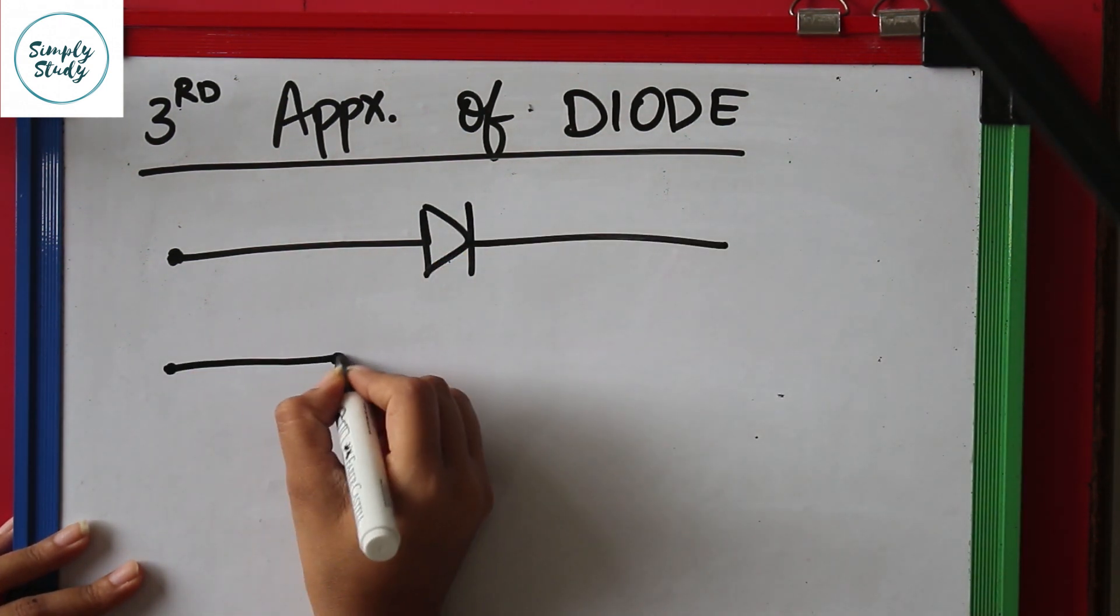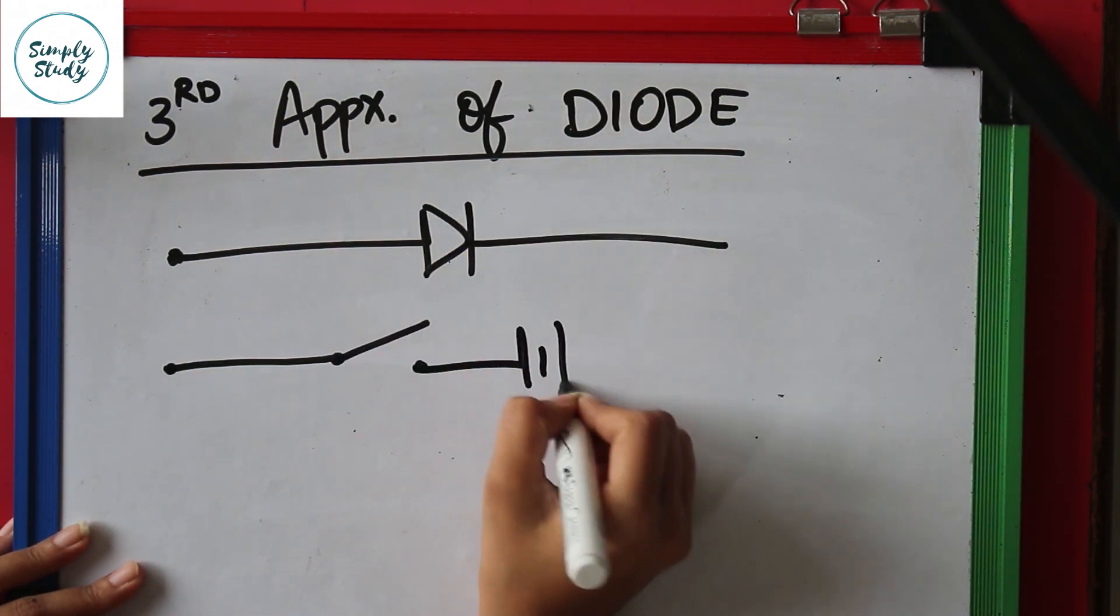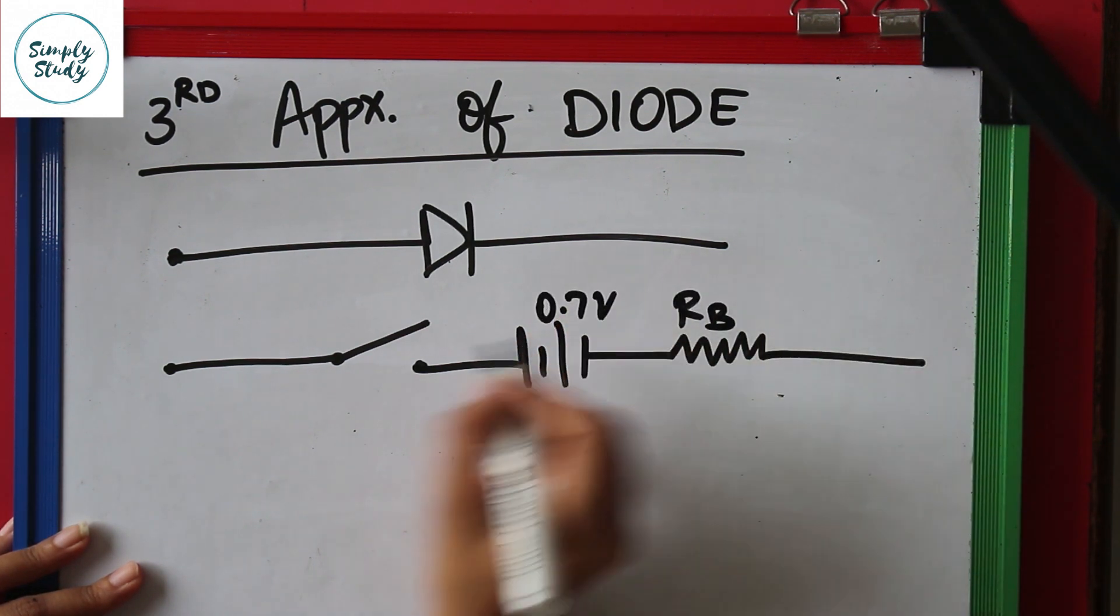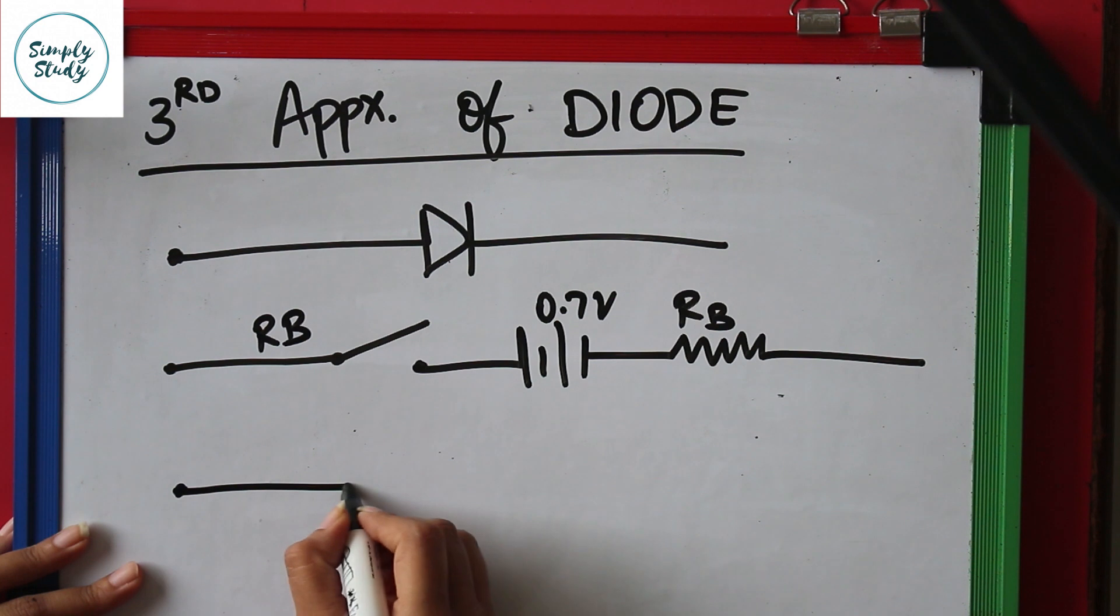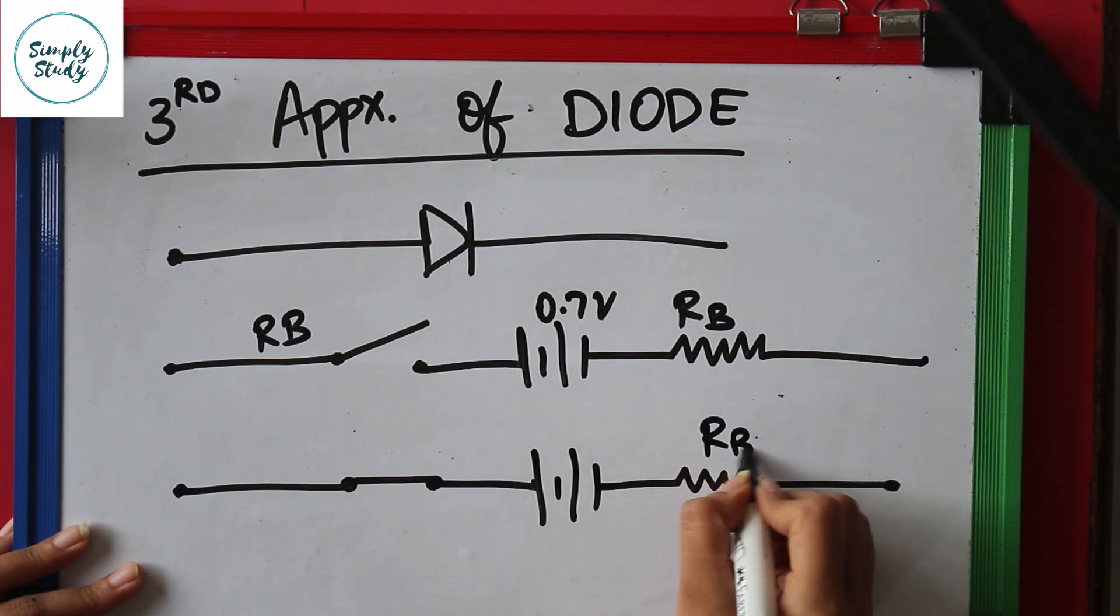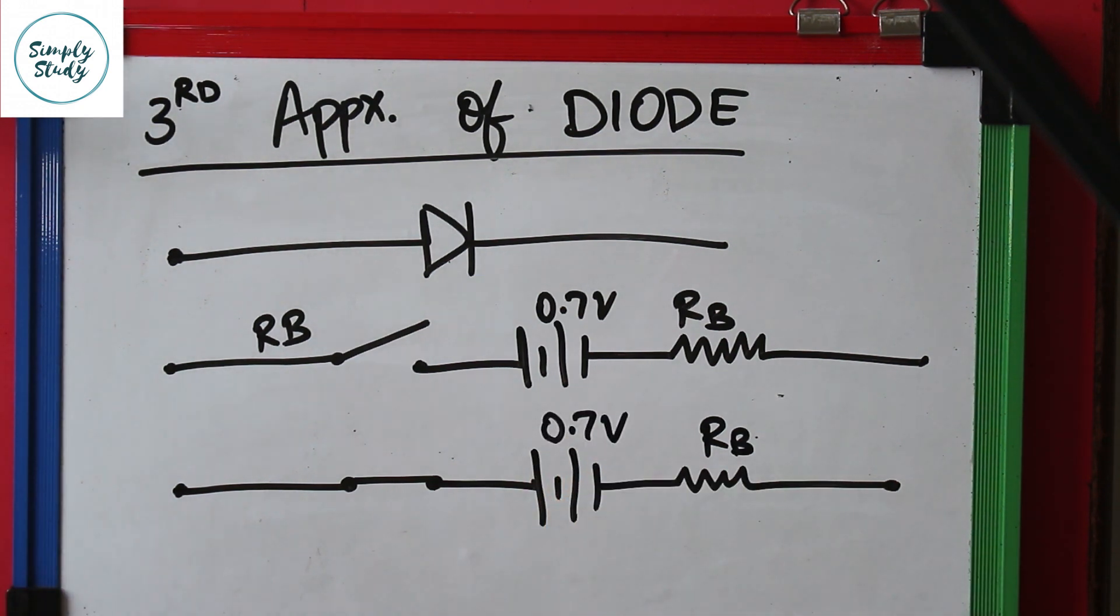So the equivalent circuit is a switch in series with a battery of 0.7 volts and a bulk resistance RB. Often the bulk resistance is ignored if it is less than 1 ohm. That's it for diode, guys.